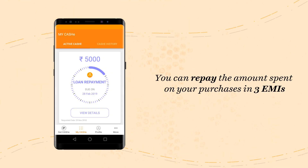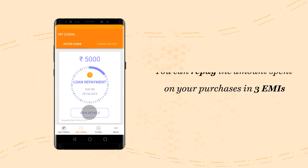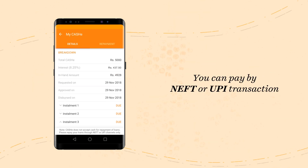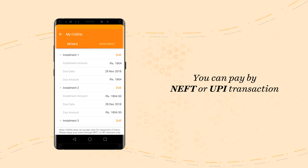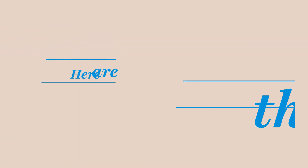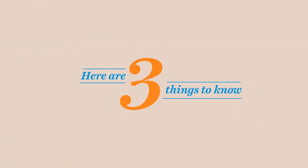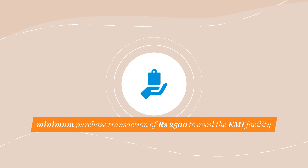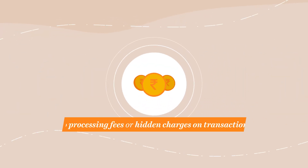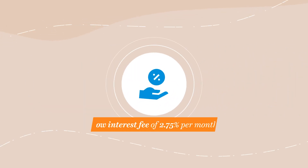You can repay the amount spent on your purchase in three equated monthly installments, via a simple NEFT or UPI transaction on the app itself. Here are three things to know: you have to make a minimum purchase transaction of Rs. 2,500 to avail of the EMI facility; there is no processing fee or hidden charges in your transactions; and you will be charged a low interest fee of 2.75% per month throughout your paying tenure.